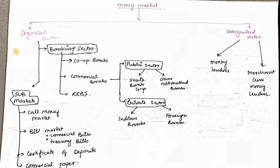The money market can be categorized into the organized sector and unorganized sector. The organized sector includes the banking sector — cooperative banks, commercial banks, RRBs, public sector and private sector banks. The instruments used in the organized sector include bill market (commercial bills), treasury bills, certificate of deposit, and commercial paper. The unorganized sector consists of money lenders and merchant money lenders.